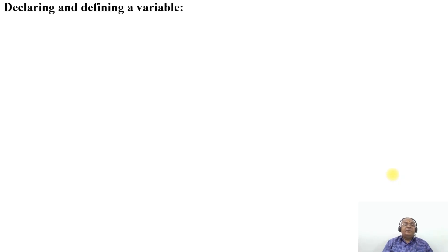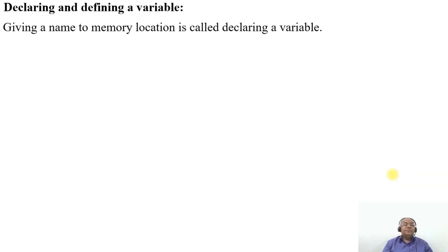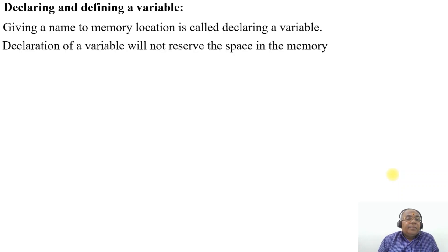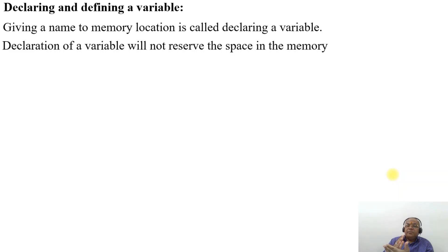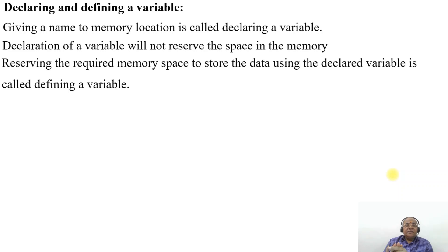Declaring and defining a variable: giving a name to a memory location is called declaring a variable. Declaration of a variable will not reserve the space in the memory. Once you declare the variable name, that doesn't mean you occupy memory. Reserving the required memory space to store the data using the declared variable is called defining a variable.